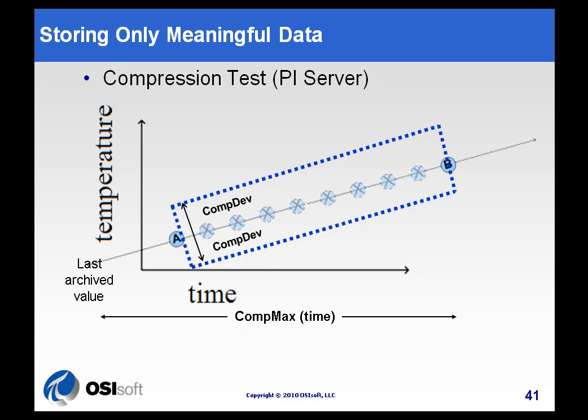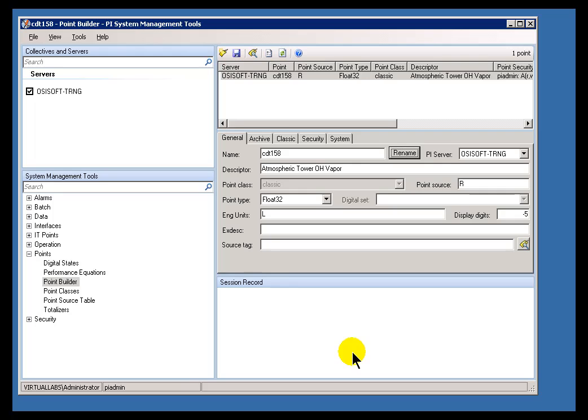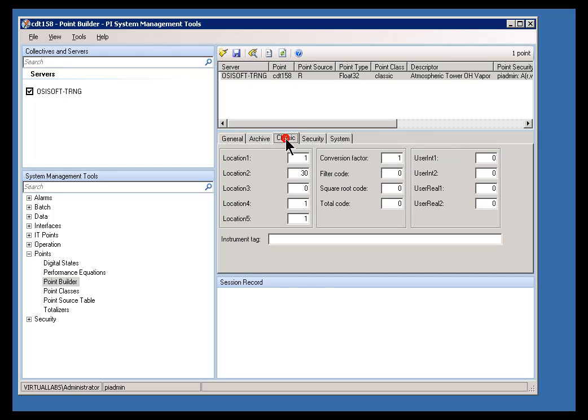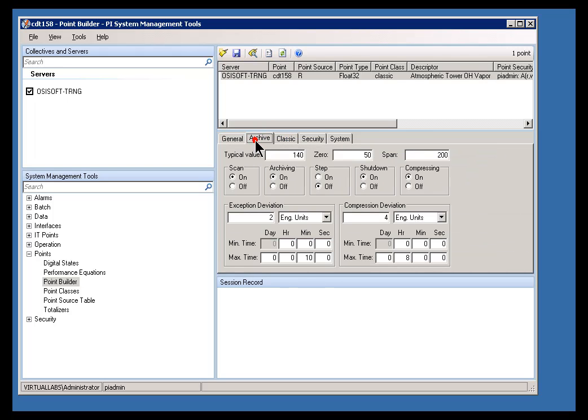And here's a quick reminder. These are point attributes, the CompDev and the CompMax, etc. There are attributes of a point, like for example, this tag, CDT158. It has all these different attributes, including the Compression Deviation and the Compression Maximum Time. You can see this is the Max and the Min Time here.